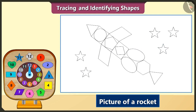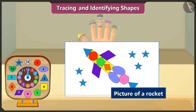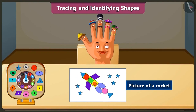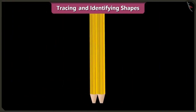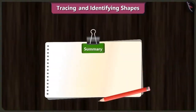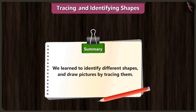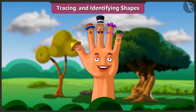If we fill the colours in this drawing, it will look beautiful! Friends, you can also draw some more pictures by tracing different shapes. Today we learned to identify different shapes and draw pictures by tracing them. You can also trace the shapes and draw different pictures. In the next video, we will identify some more shapes and count them and we will also colour them.